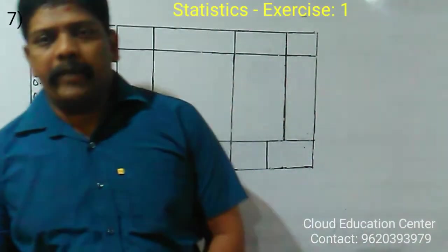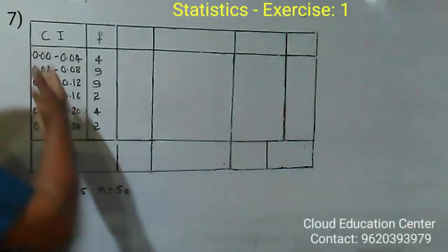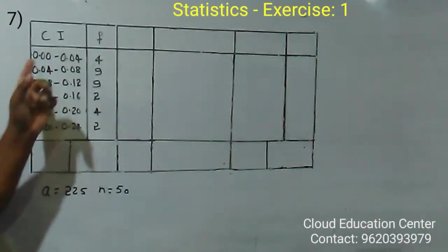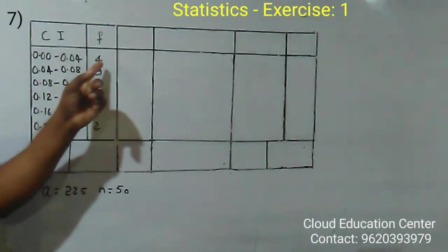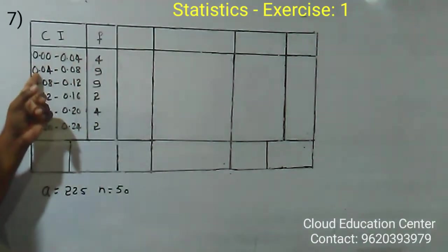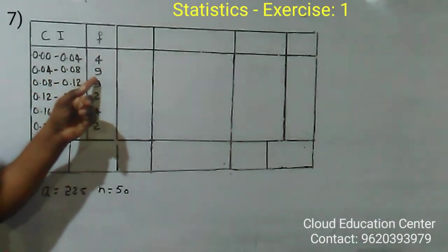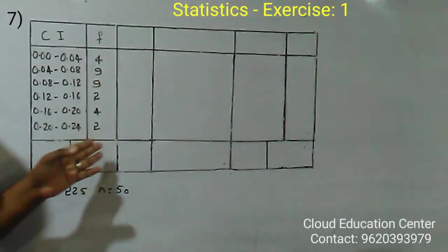The table is given. The first class interval is 0.00-0.04 with frequency 4, and 0.04-0.08 with frequency 9. Similarly, the table continues with other intervals.